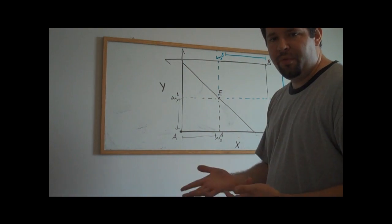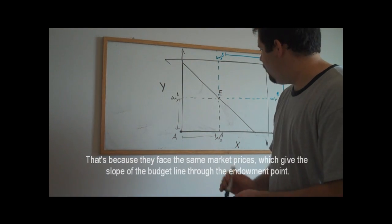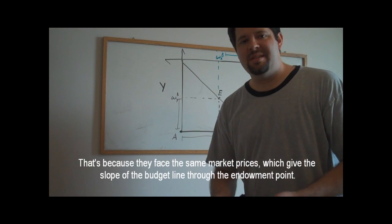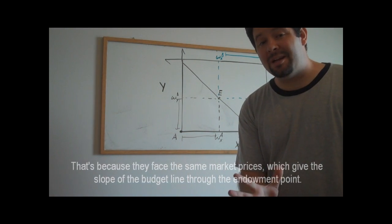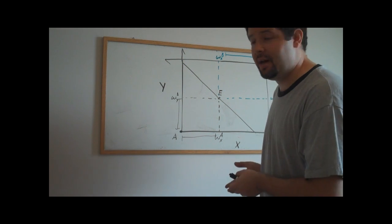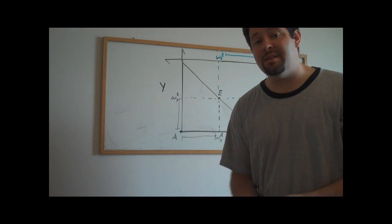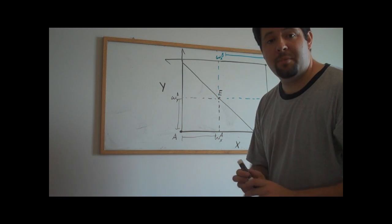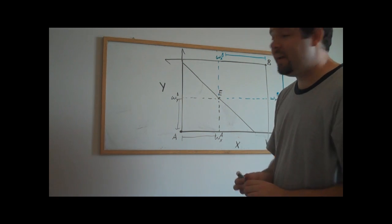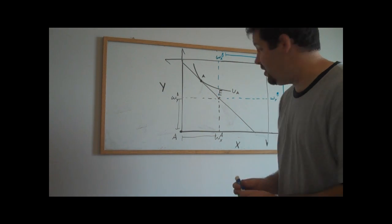And what we'll see is that both individuals will face this common budget constraint. So, one thing that you'll see is that in this endowment economy, the way we think about how individuals interact is that they take the prices as given and they maximize utility. So, for example, individual A might go to a point like A, and individual B might go to a point like B.